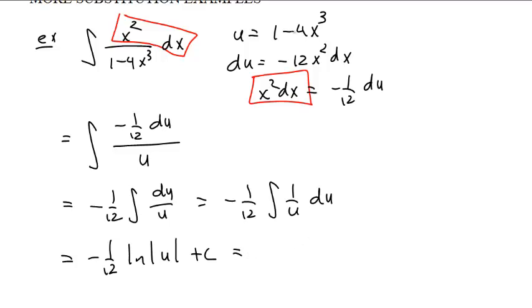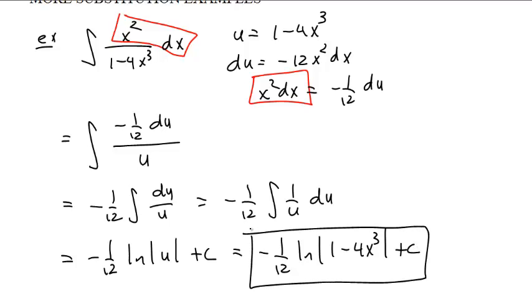And you plug your u, you can turn your u's back into x's. And negative 1 twelfth, the natural log of the absolute value of 1 minus 4x cubed plus c. And we are done. You want to check that. You can check that its derivative is x squared over 1 minus 4x cubed. And so that is the right answer.